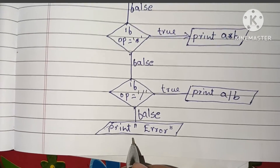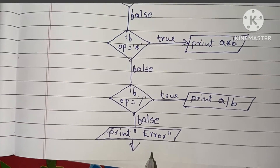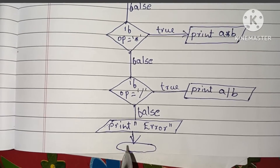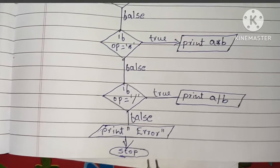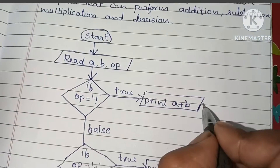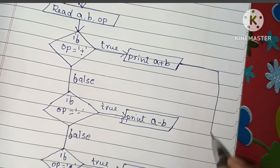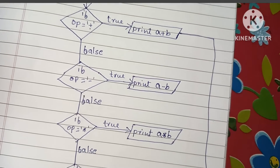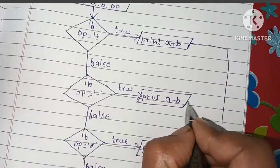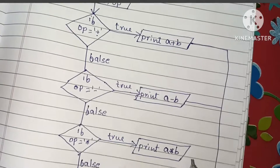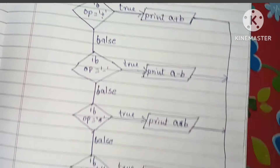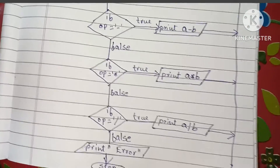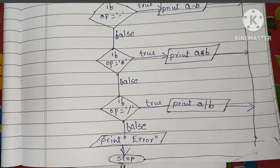Finally, the flowchart ends with a stop statement, which is always written within an oval shape. All the output steps are connected back to the stop statement.